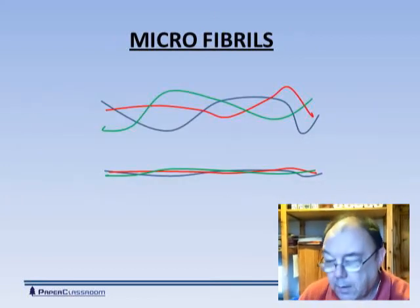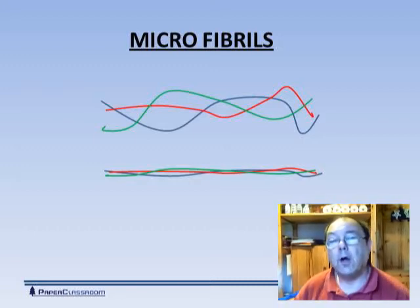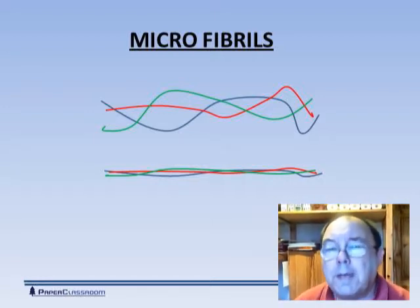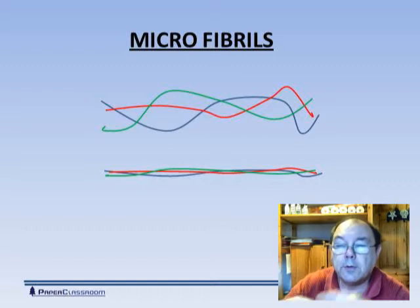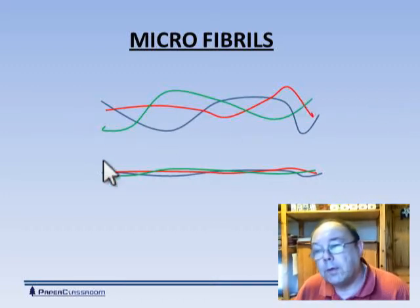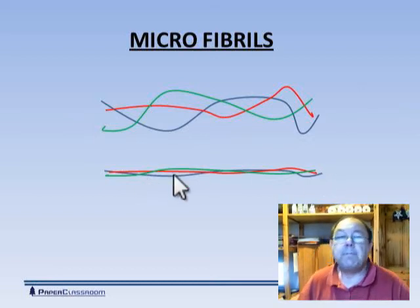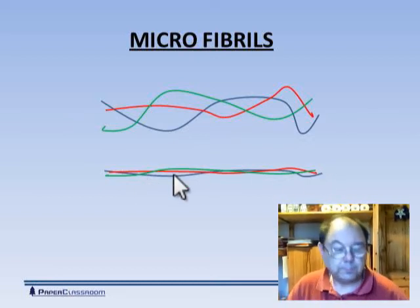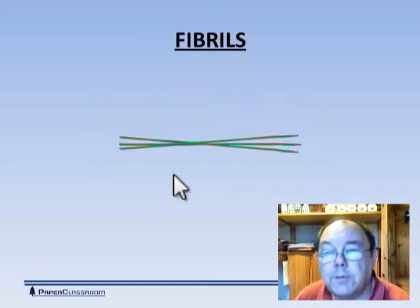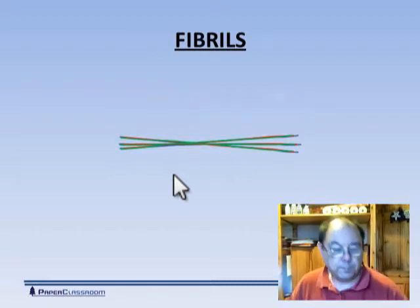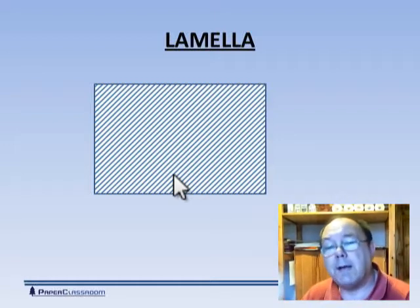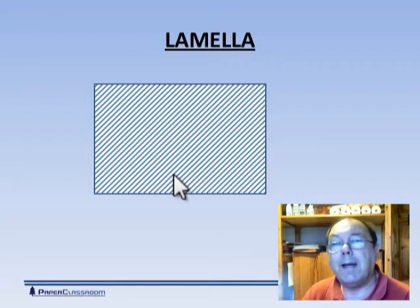So how does the plant do it? It starts by producing long cellulose filaments — a single molecule thick, so not very strong — but these long cellulose filaments are then entwined around each other to form what we call microfibrils. The microfibrils then wrap around themselves to form fibrils, and the fibrils come together side by side to form a lamella, or a layer.